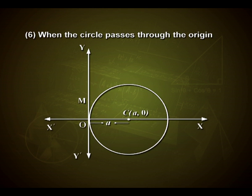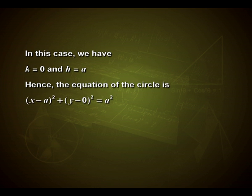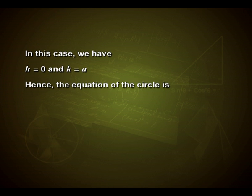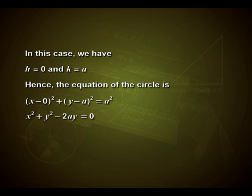In the sixth case, when the circle passes through the origin and the center lies on the x-axis: here k = 0 and h = a, so the equation is (x - a)² + (y - 0)² = a², which simplifies to x² + y² - 2ax = 0. In the seventh case, when the circle passes through the origin and the center lies on the y-axis: here h = 0 and k = a, so the equation is (x - 0)² + (y - a)² = a², giving x² + y² - 2ay = 0.